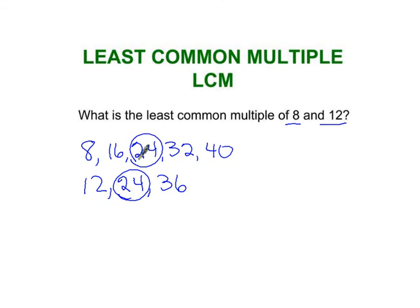Twenty-four and twenty-four, these numbers are the same and they're the lowest number that is the same in both lists. We don't have any numbers here or down here that are the same, so the lowest common multiple of eight and twelve is twenty-four.